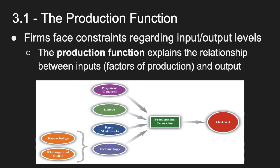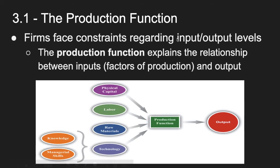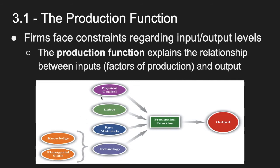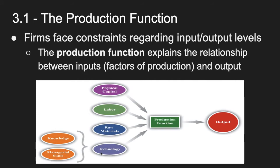The production function is simply the process through which firms actually generate output. Firms face constraints — this is scarcity. They face constraints regarding input, which means they also face constraints regarding output, because you need input to get output. All of these items — physical capital, labor, raw materials, technology, the knowledge and skills to use that technology — are what we call factors of production. They all feed into the production function, which then generates output.